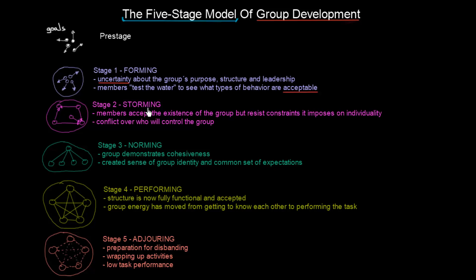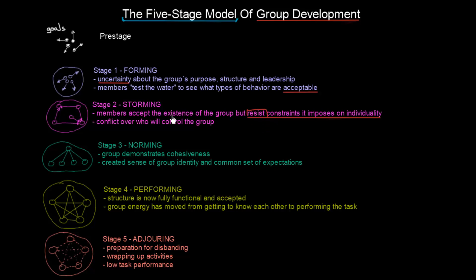The second stage is called storming. Members accept the existence of the group but resist the constraints it imposes on individuality. They now understand there is a group and that they should cooperate, but they are still resisting the constraints on their personal goals. There is also conflict over who will control the group — who will be the leader.